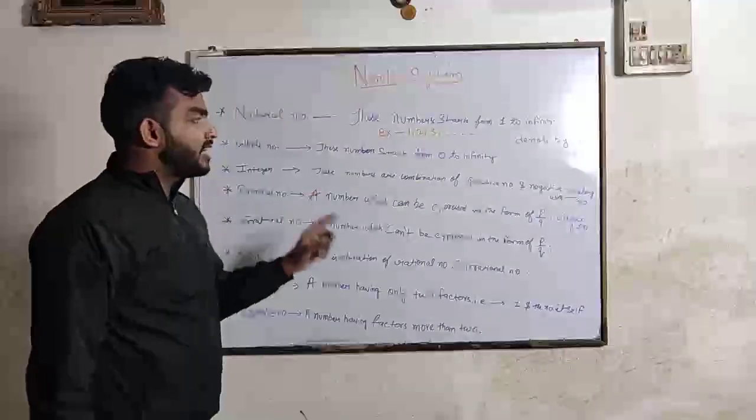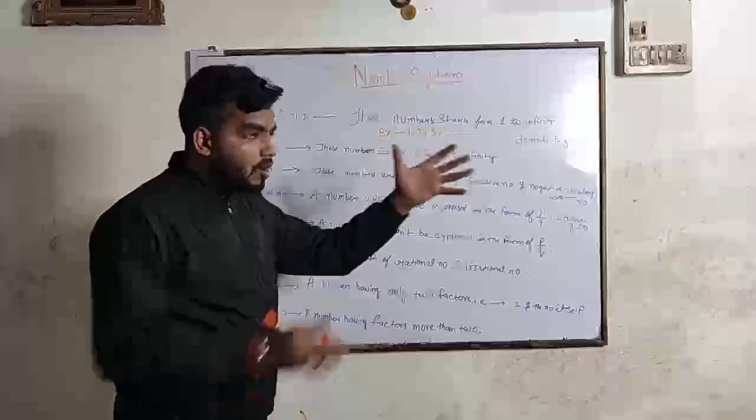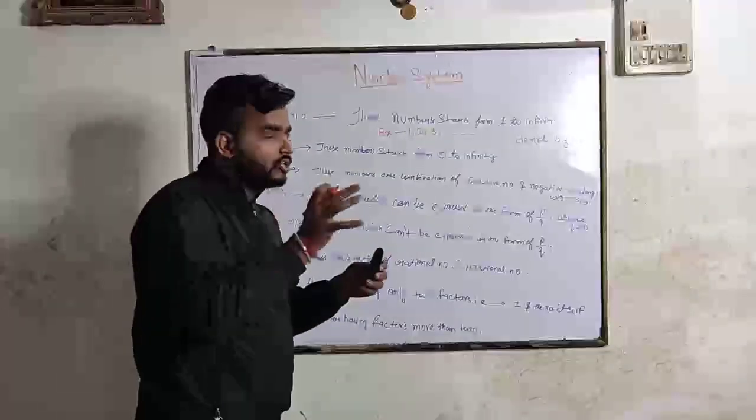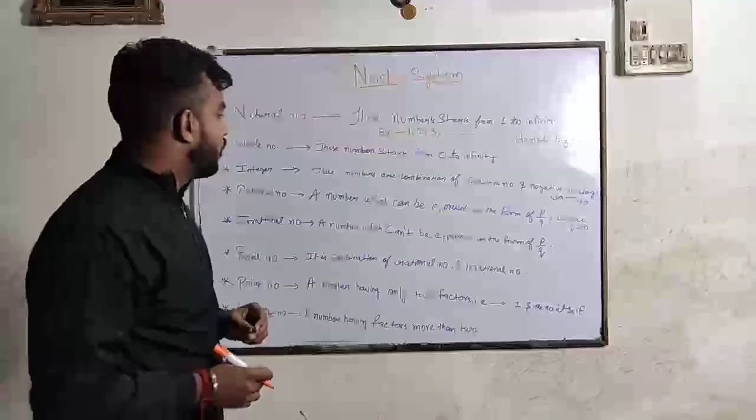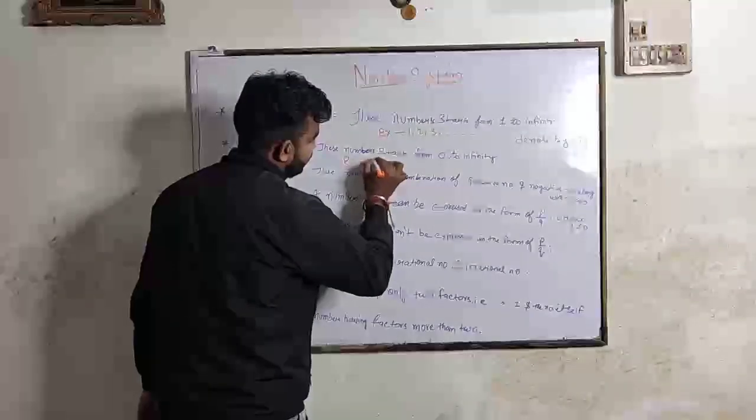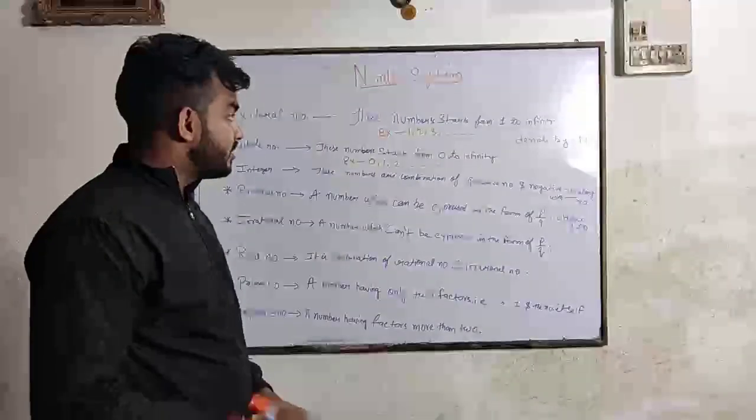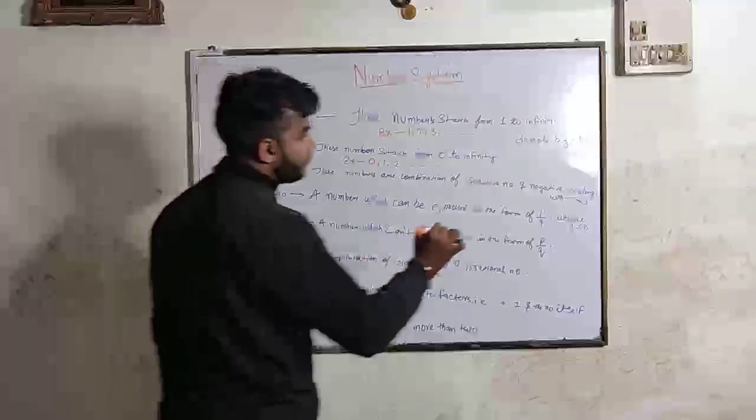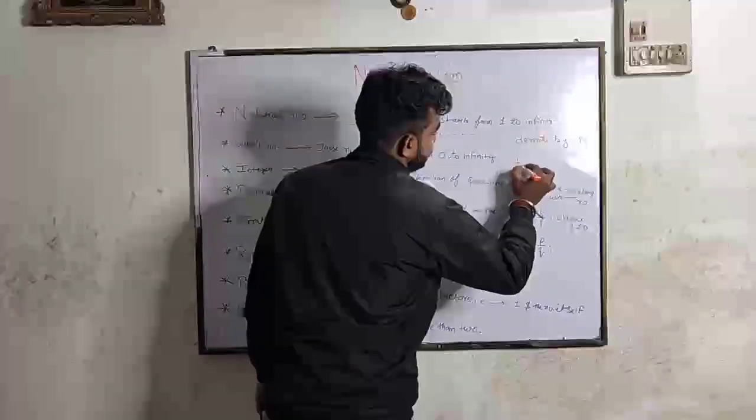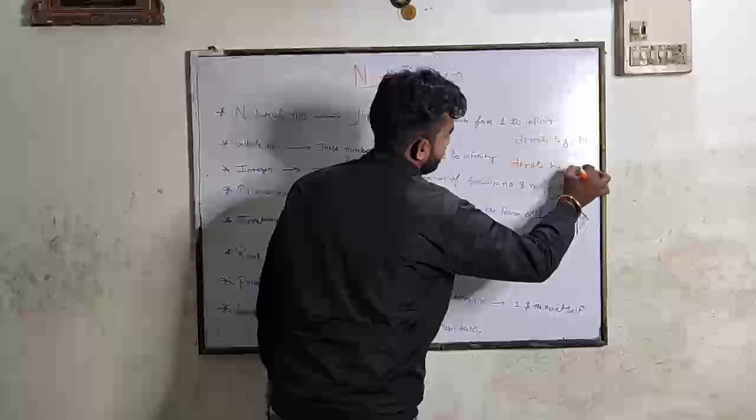Whole number. This number is started from 0 to infinity. And all natural number plus 0 you get whole number. Examples. 0. Smallest whole number is 0 and largest whole number is infinity. We denoted by W.